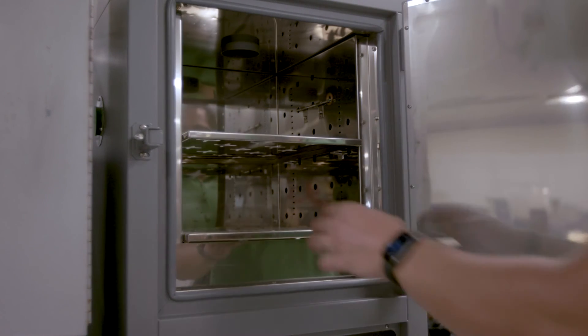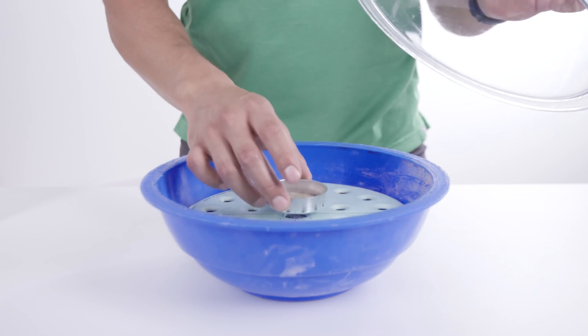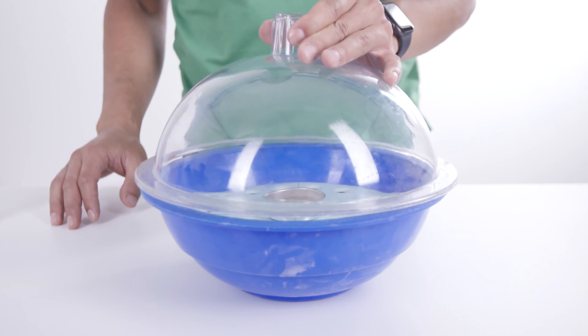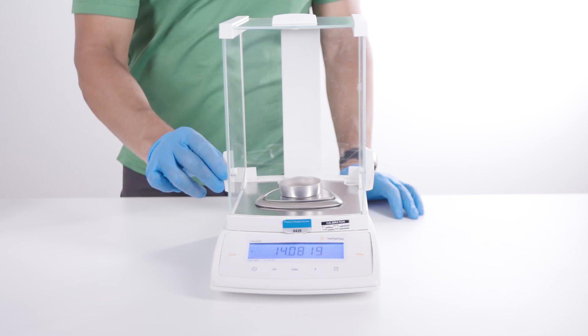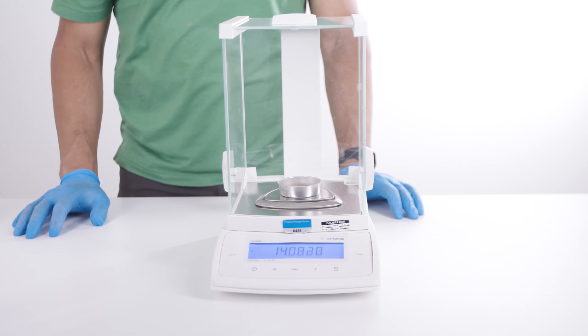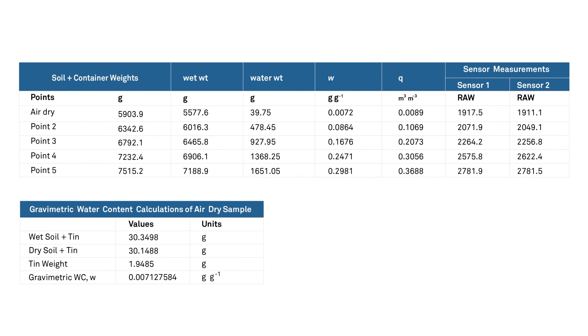Remove the soil drying container from the oven. Place the container in a desiccant chamber and allow it to cool. Measure the mass of the dry soil plus the container. Enter the dry mass into Table 1.